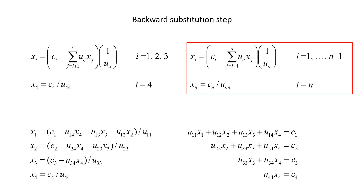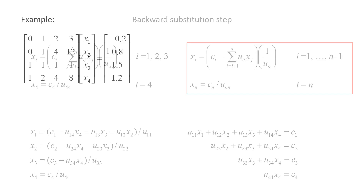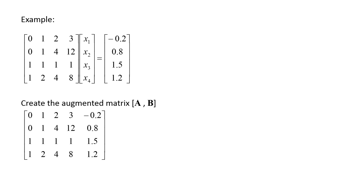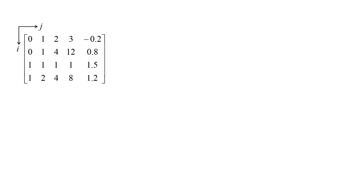Now let's return to how to convert Ax equals b into Ux equals c in the forward elimination step, using an example with a system of 4 equations. The A matrix is [0,1,2,3; 0,1,4,12; 1,1,1,1; 1,2,4,8] and the b vector is [-0.2, 0.8, 1.5, 1.2]. It is easier to solve this problem using the augmented matrix, which is simply the b column vector attached to the right side of the A matrix, making a 4 by 5 matrix. We use i for the row index and j for the column index.